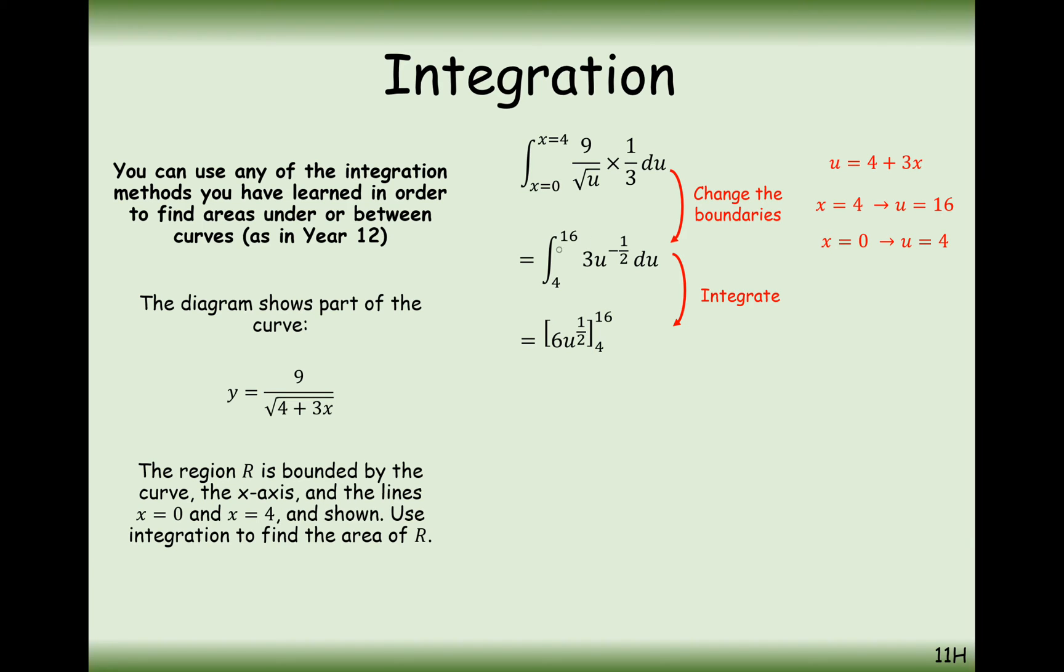Notice here how when you're doing the integration and changing the boundary, you actually don't have to substitute 4 plus 3x back in. I now know that my u boundaries are 16 and 4, so I'm just going to substitute 16 and 4 into the value for u here. So substitute the boundaries in, do your calculation, and you get 12 units squared. So there we are, that's how we do this type of problem.